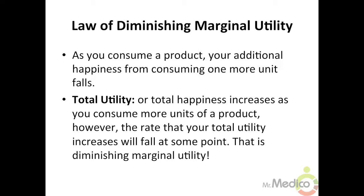Say you just completed your seventh year of marriage and realized that your additional happiness gained in the seventh year is less than the additional happiness gained in the sixth year — that's because of diminishing marginal utility. Your total utility or total happiness increases as you consume more units of a product; however, the rate that your total utility increases will fall at some point — that is diminishing marginal utility.